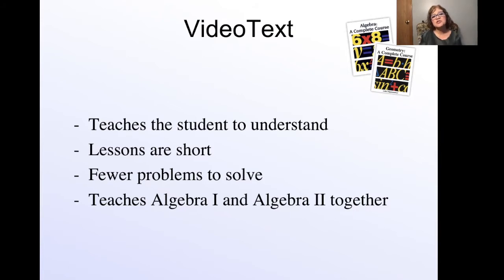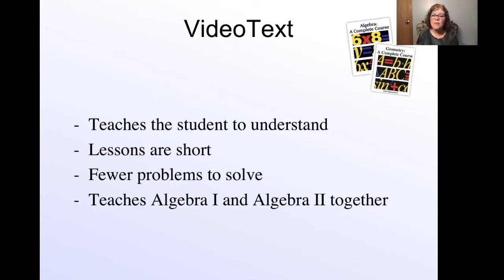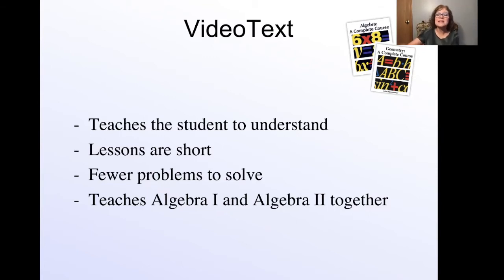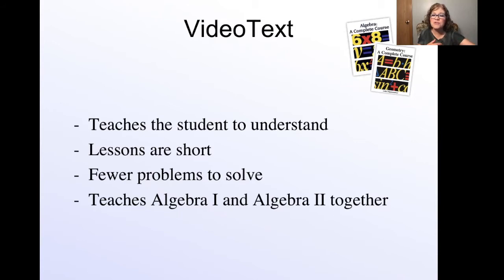VideoText also takes an interesting stance on course sequencing. The typical high school student takes Algebra 1, then Geometry, then Algebra 2 — and the problem is that by the time they get to Algebra 2, it's been about a year since they've covered Algebra 1 and they've forgotten a lot. So the first couple months of Algebra 2 are spent reviewing. VideoText takes all of that out; instead, they take one discipline in Algebra and teach it all the way through from Algebra 1 to Algebra 2, then build upon the next discipline. That way your child is learning all of Algebra 1 and Algebra 2 together.